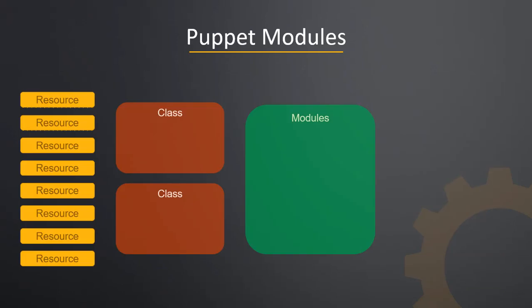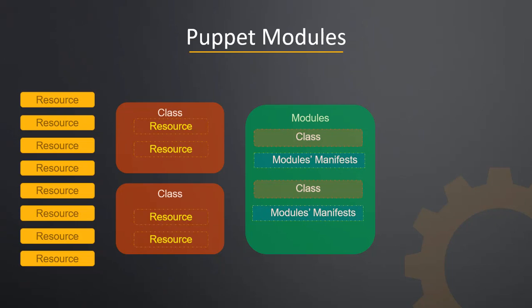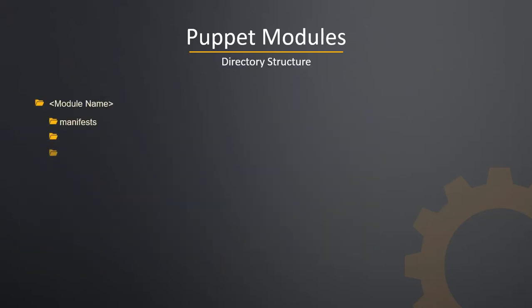Puppet modules are self-contained bundles of code and data. Puppet resources are the basic building block of Puppet, and Puppet classes are a collection of resources bundled together as a single unit. Puppet modules are next in the Puppet hierarchy — in layman's terms, they are the collection of Puppet resources and Puppet classes bundled together as a single unit. Puppet modules have their own directory structure which contains a manifest directory where we write Puppet code, known as Modules Manifests.